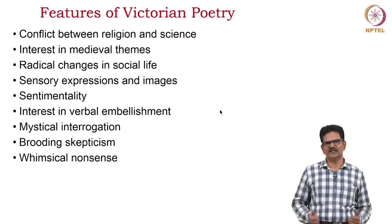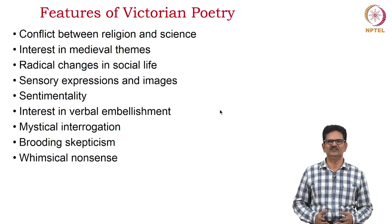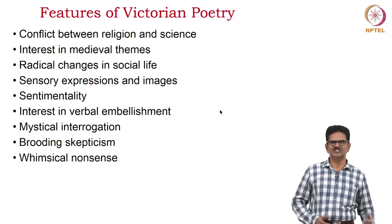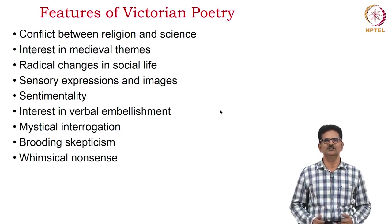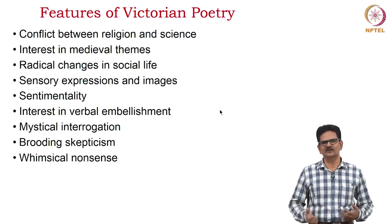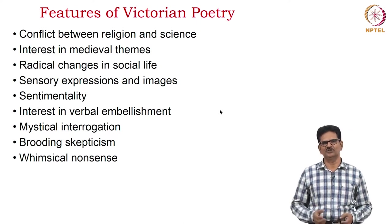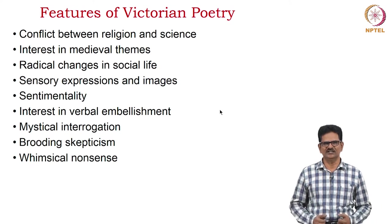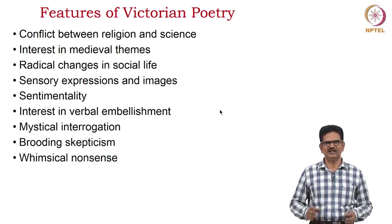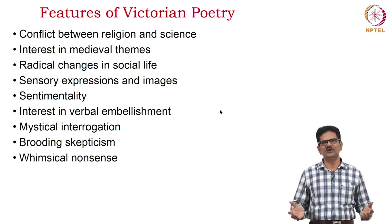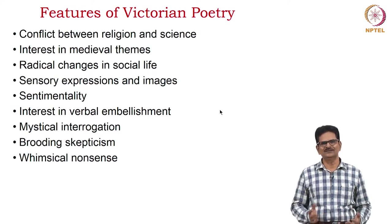What are those features of Victorian poetry that we need to keep in mind? Here we have listed some of them. Conflict between religion and science is the major one — faith and doubt. Interest in medieval themes: those writers went back to the past and looked for sources of inspiration. We also noticed radical changes in social life which contributed to the flourishing of literature in this period. The poets and writers of this period paid attention to sensory expressions and images. They were also sentimental in their writings. Further, they took interest in verbal embellishment, which we can see more in poets like Tennyson.